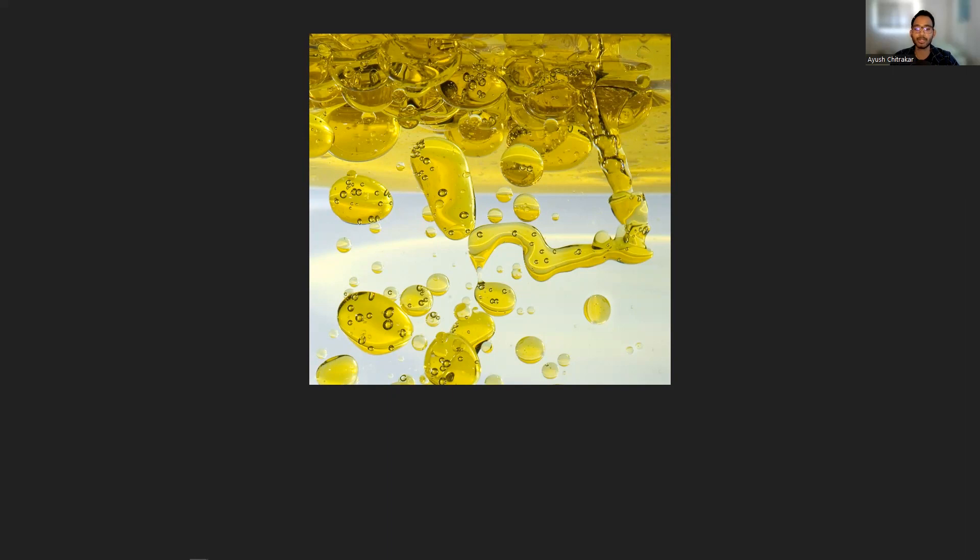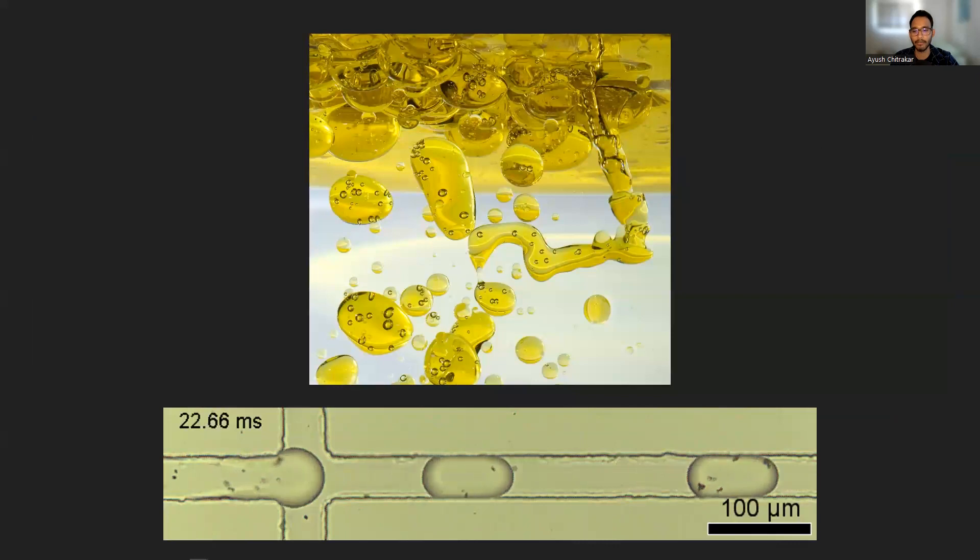We can create these droplets in a controlled manner to make sure that they are the same size every single time. This makes it so that each droplet becomes a mini-experiment that we can perform. One big advantage of this technology is that we are able to generate hundreds of droplets in a few seconds, and with each droplet being an experiment, we can take hundreds of measurements to speed up an experiment that might take hours down to a few minutes.